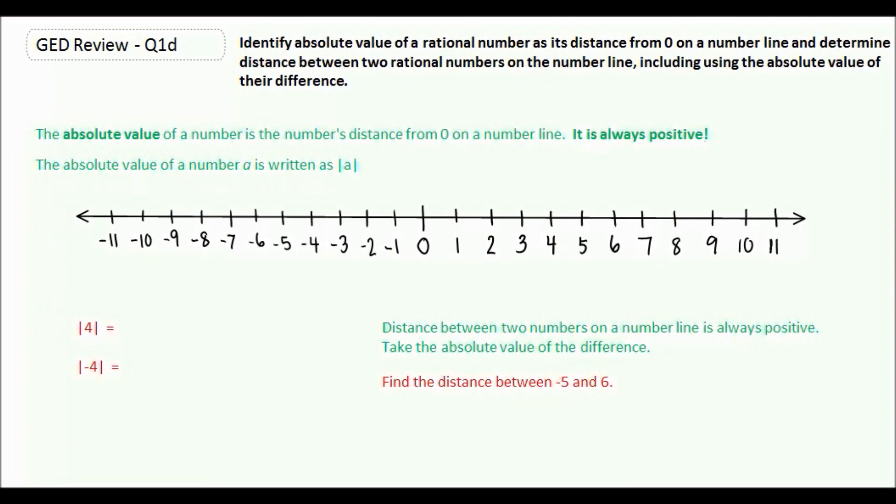The last topic we're going to talk about is absolute value. The absolute value of a number is the number's distance from zero on a number line. A quick way to remember how to do absolute value is that it is always positive.